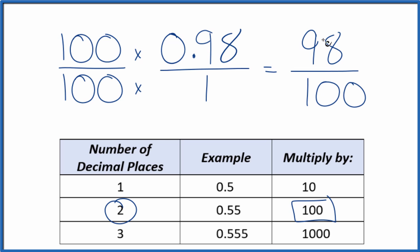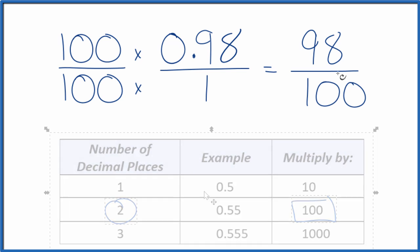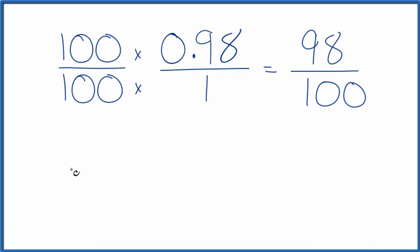And now we have a fraction, 98 over 100. But we can simplify this a little bit further. Let's give ourselves some room. Since they're both even numbers, let's divide them by 2.